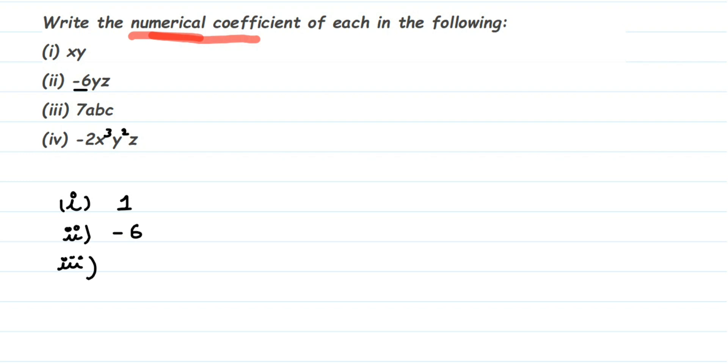Third question, we have 7abc. So the numerical coefficient for this expression will be 7. The last one: we have -2x³y²z. So the numerical coefficient is -2. The -2 is present there. So that's it.